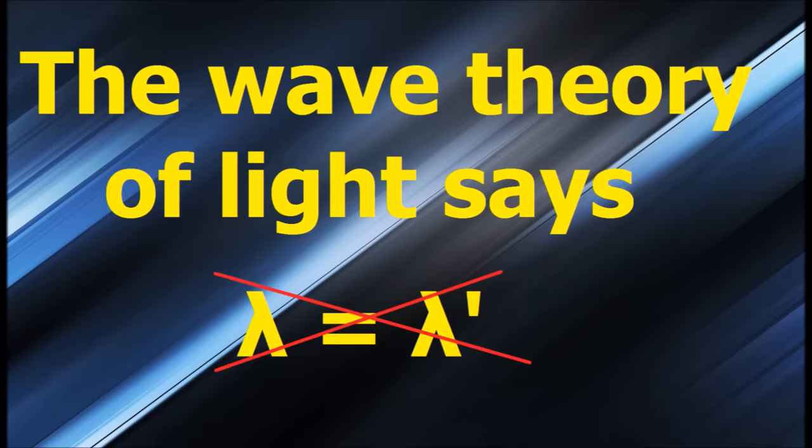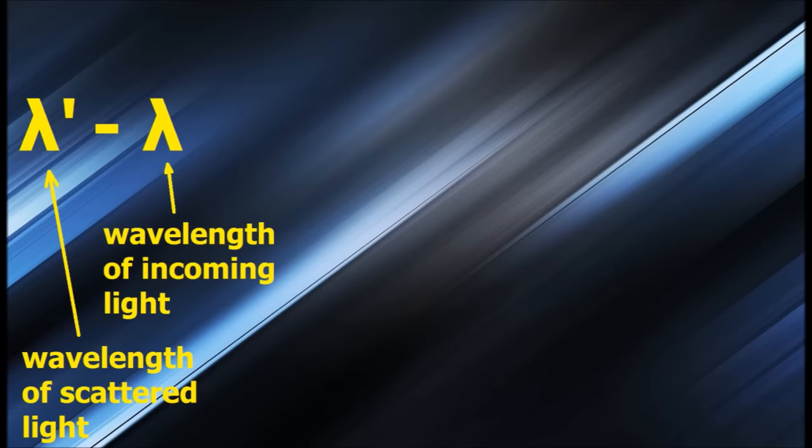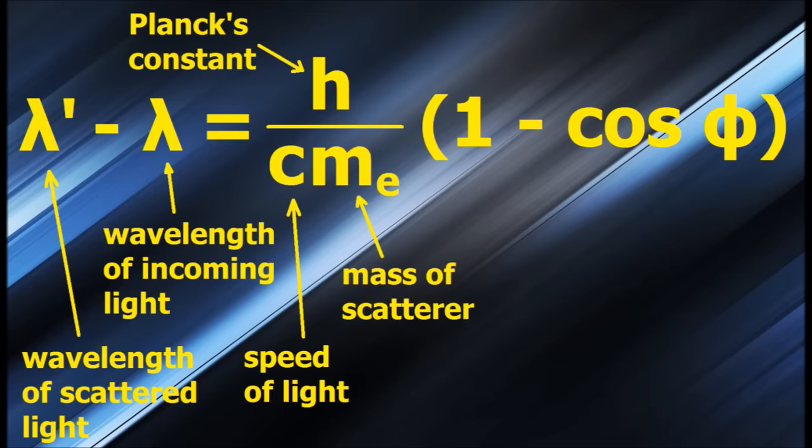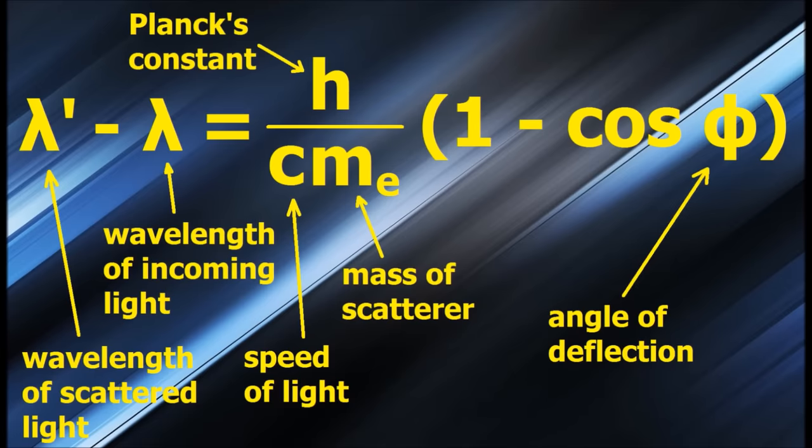But they weren't. After the experiment was performed, Compton found that this relationship held instead. The wavelength of scattered light, minus the initial wavelength of the light, equals Planck's constant, divided by the product of the speed of light and the mass of whatever the light was striking, which in this case was an electron, times one minus cosine of phi, where phi is the angle at which the light was deflected. Obviously, the incoming and outgoing wavelengths are not equal. If they were, their difference would be zero. Instead, this equation implies that the wavelengths of scattered light are larger than the wavelengths of the incoming light, and once again, we have this mysterious factor of h in the equation. So what's going on here?